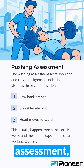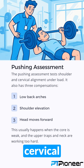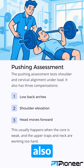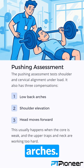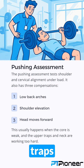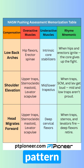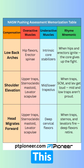Number two: Pushing assessment. The pushing assessment tests shoulder and cervical alignment under load. It also has three compensations: low back arches, shoulder elevation, and head moves forward. This usually happens when the core is weak and the upper traps and neck are working too hard. Here's your push pattern mnemonic to lock in those three key compensations. Take a screenshot — this chart makes memorizing muscle imbalances way easier.